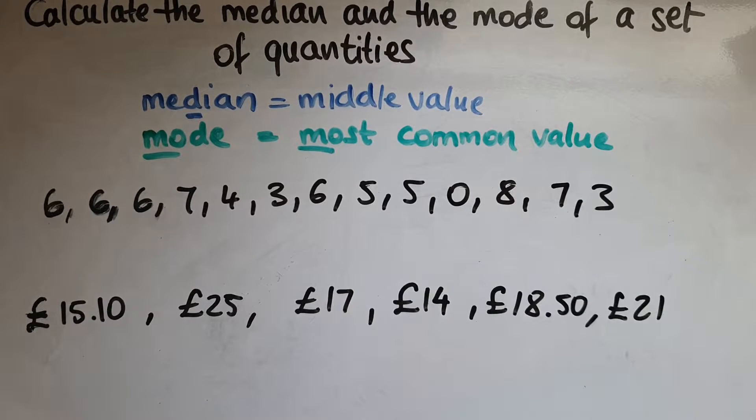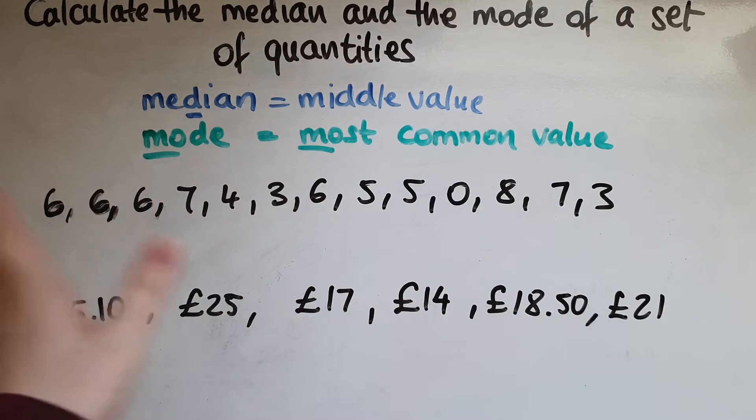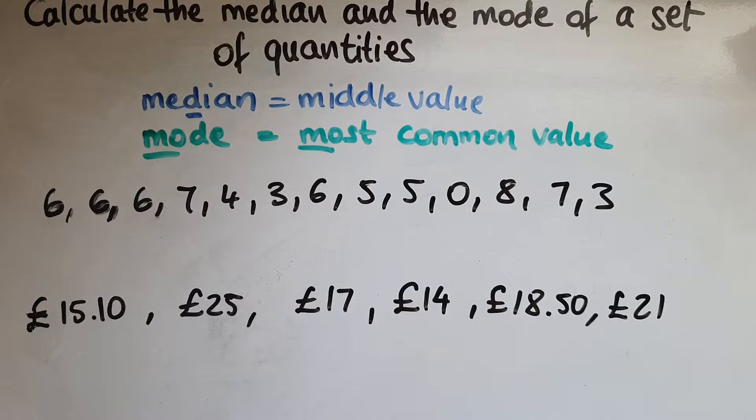In this video we'll learn to calculate the median and the mode of a set of quantities. We've looked at the mean and the range before, now we'll focus on the median and the mode. As you can see here, median refers to the middle value, so putting them in order and finding the middle value. And mode is the most common value, the one that repeats itself most.